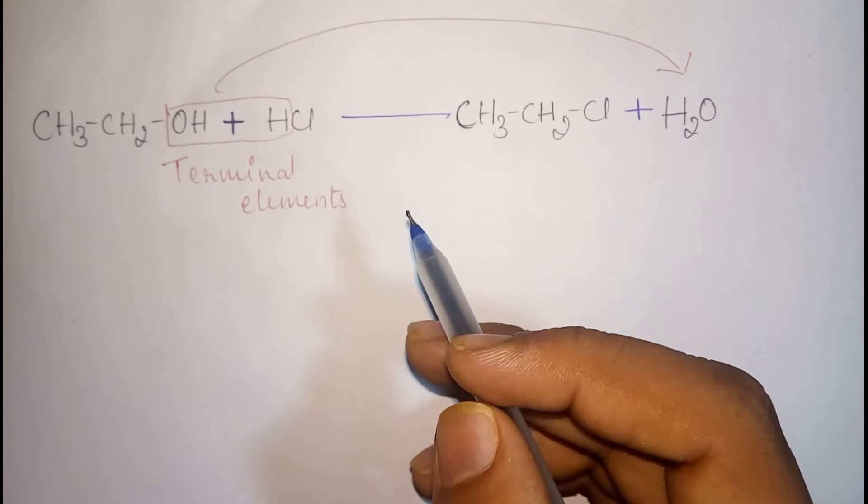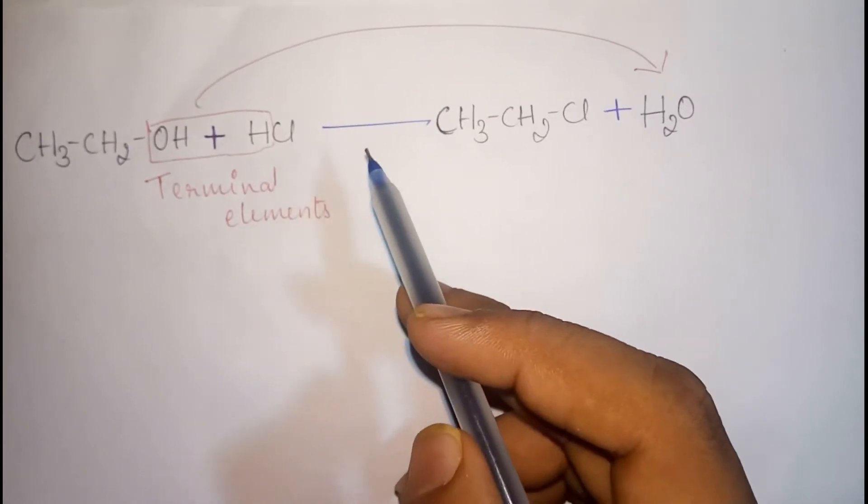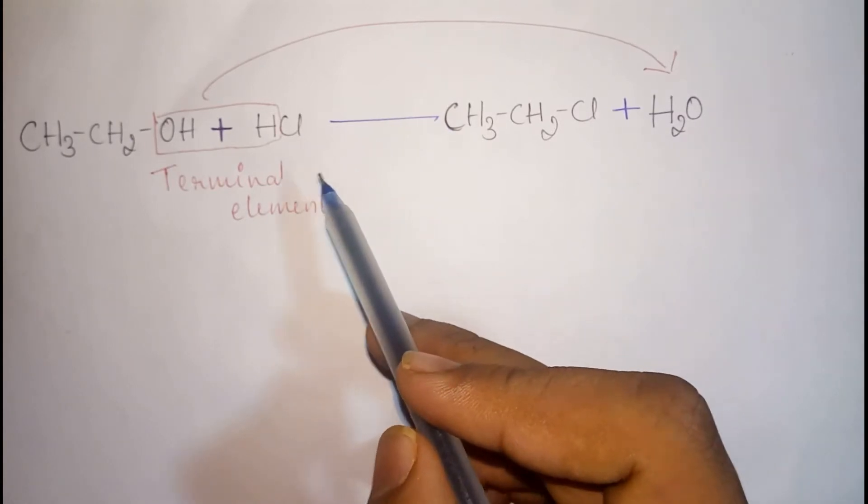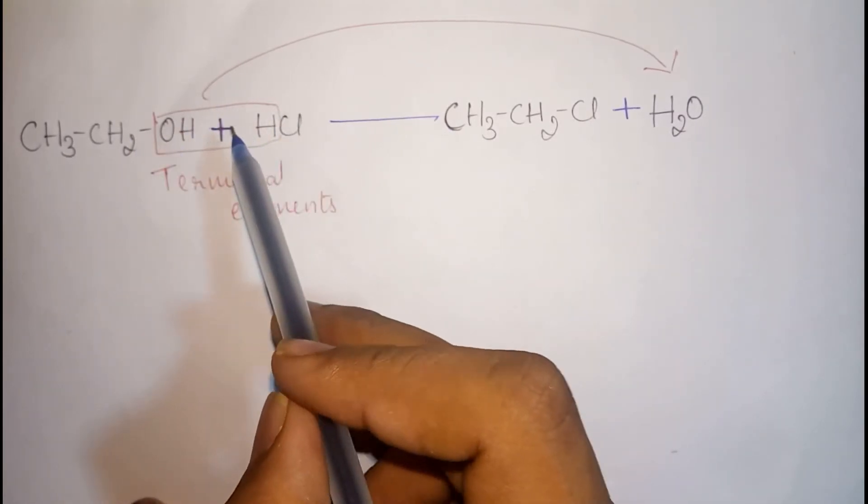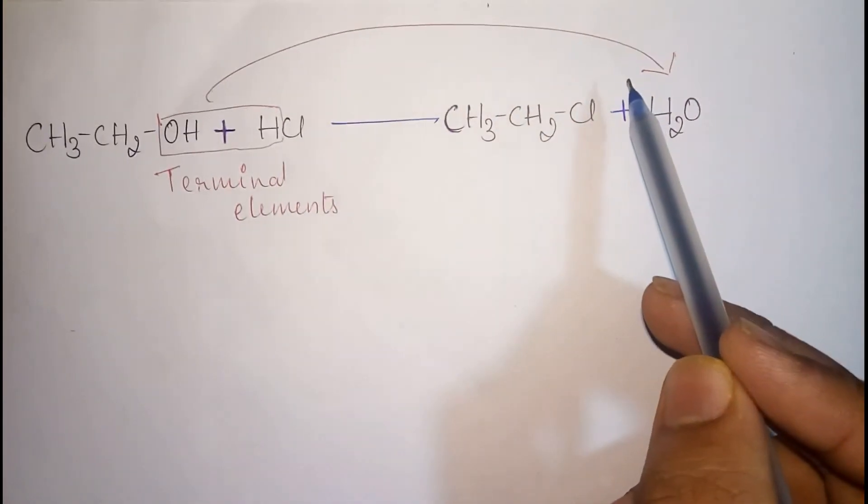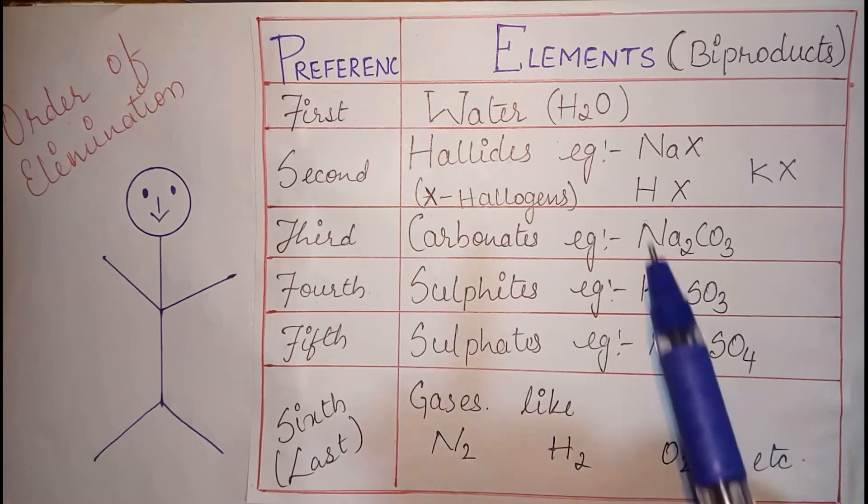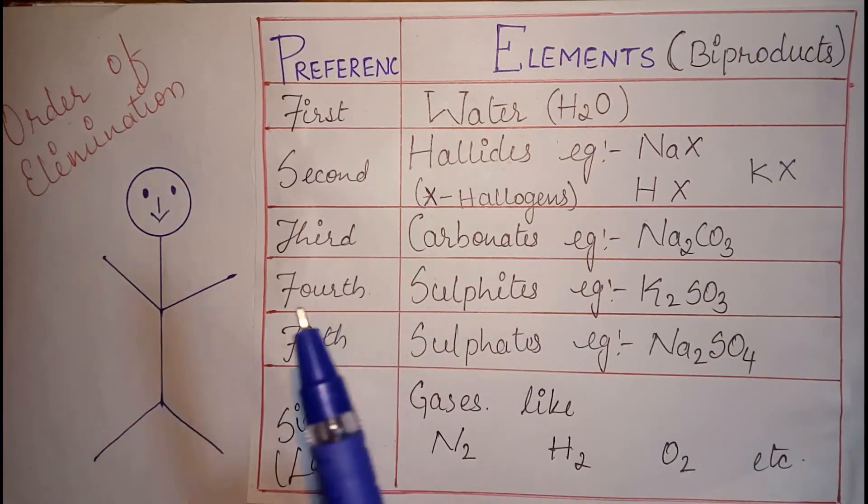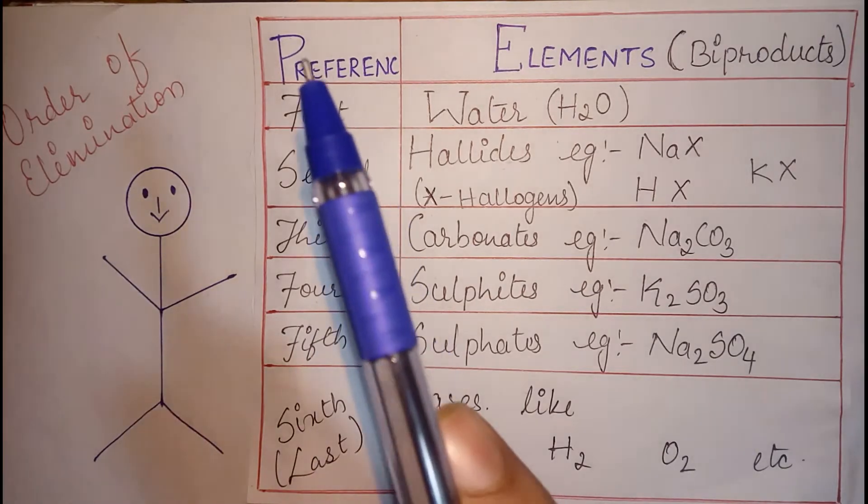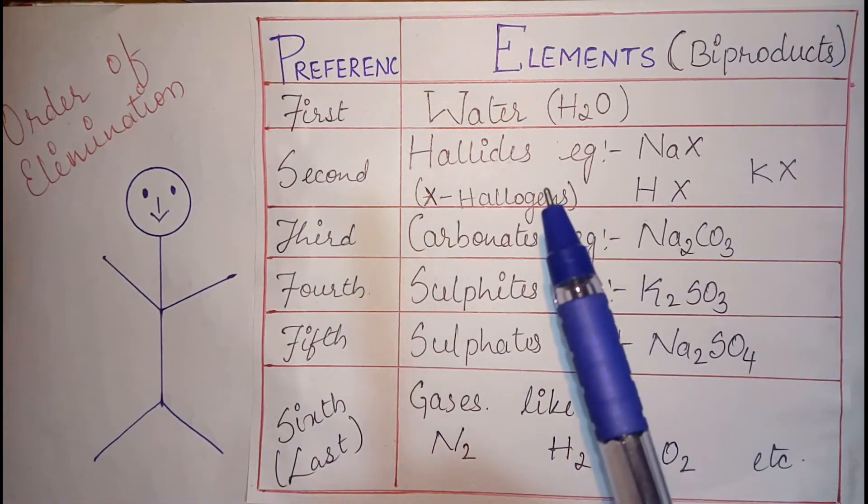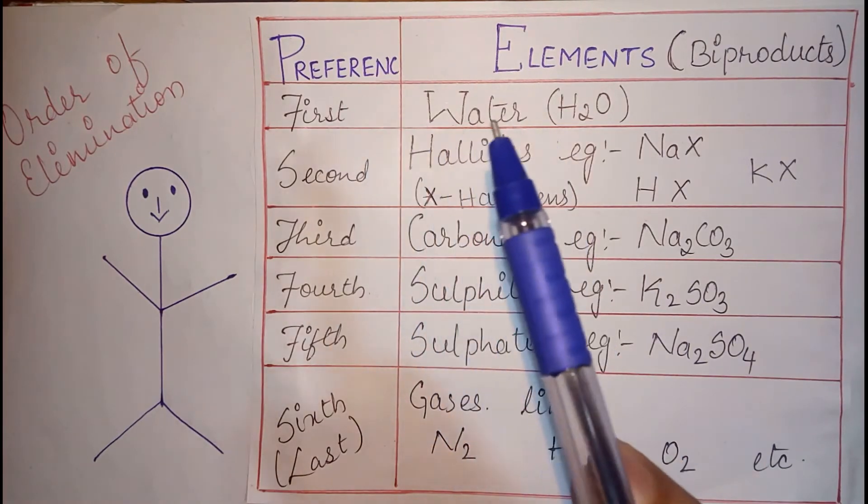Friends, in elimination reaction 99% of them are terminal which means the terminal elements combine and forms the byproducts. Now, let us see the very important table that gives us sequential order of elimination. While eliminating first preference should be given to the water molecules which means you should try to eliminate water from the reactants.